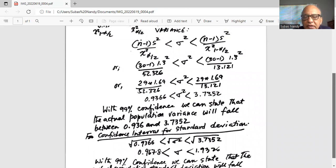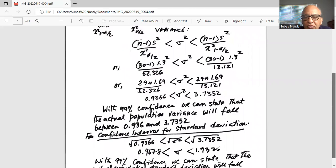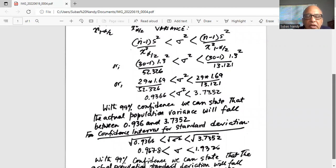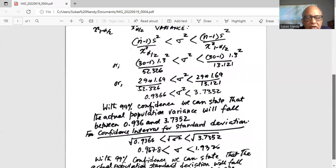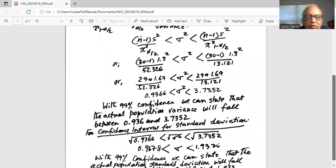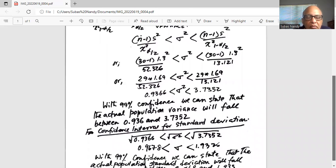Okay, now we need to calculate the 99% confidence interval for the standard deviation. We know standard deviation is square root of the variance, so we take the square root of the lower boundary to get √0.9366 and the upper boundary is √3.7352. So the standard deviation, which is square root of the variance σ, will fall between 0.9678 and 1.9326.